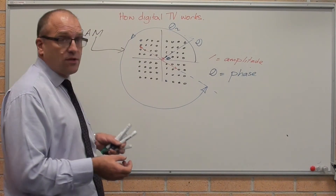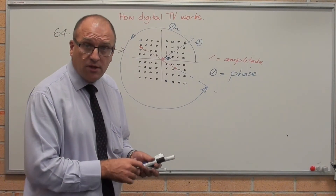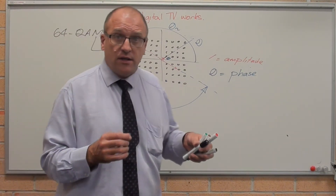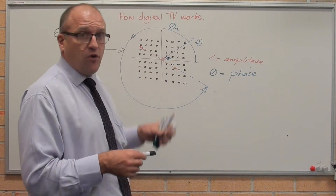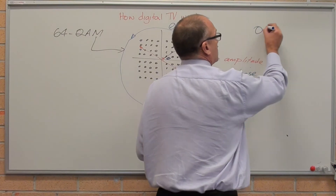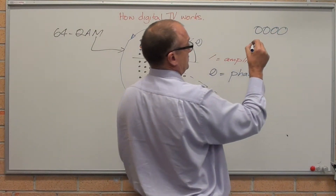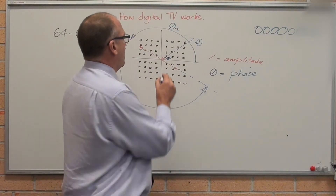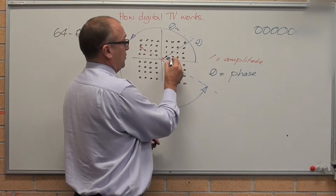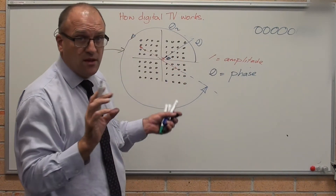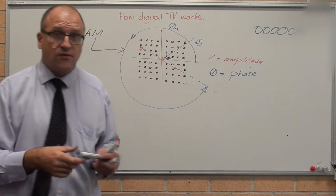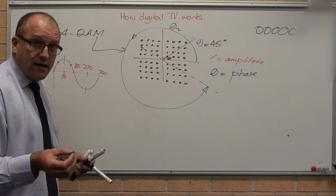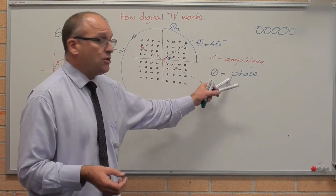Now, looking at how digital TV works — the final bit is Quadrature Amplitude Modulation, or 64-QAM. You have your series of 1s and 0s. 64 means you can have combinations from all zeros — that dot might be 000000000100 and so on — giving 64 options. In QAM-64, you modulate the amplitude and the phase. This is a sine wave: 90 degrees, 180, 270, 360.